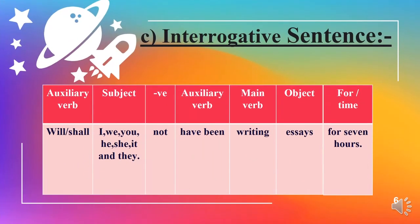Now we will discuss the structure of interrogative sentences. Apply will or shall at the start of the sentence, then apply subject. After subject, apply 'not,' then apply auxiliary verb 'have been.' After that apply the main verb as first form with -ing such as 'writing,' then apply object such as 'essays.' After object apply 'for' and time such as 'for seven hours.'